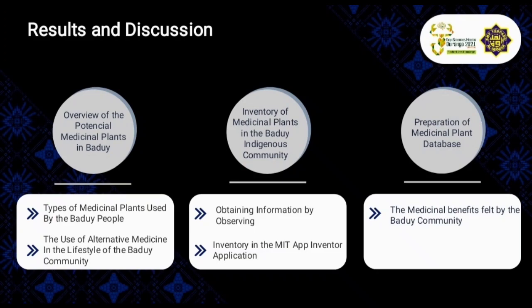Next, result and discussion. There are six points that we will highlight. The first is an overview of potential medicinal plants in Badui — including types of medicinal plants used by the Badui people and the use of alternative medicine in the lifestyle of the Badui community. Next, inventory of medicinal plants in the Badui indigenous community, obtaining information by observing an inventory in the MIT App Inventor application. Next, preparation of the medicinal plants database, including the medicinal benefits felt by the Badui community.